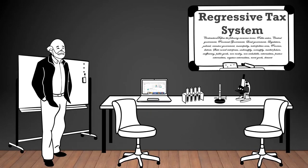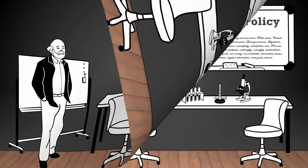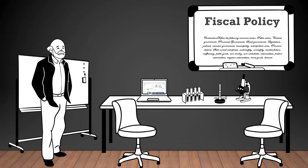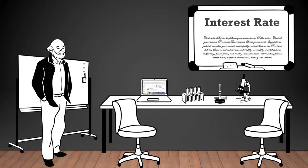Regressive tax system: a tax system where the average tax rate decreases as income increases, resulting in higher-income individuals paying a lower percentage of their income in taxes. Monetary policy: the management of money supply and interest rates by the central bank to control inflation and stabilize the economy. Fiscal policy: the use of government spending and taxation to influence the economy's overall level of activity. Interest rates: the cost of borrowing money or the return on investment, expressed as a percentage of the principal amount.